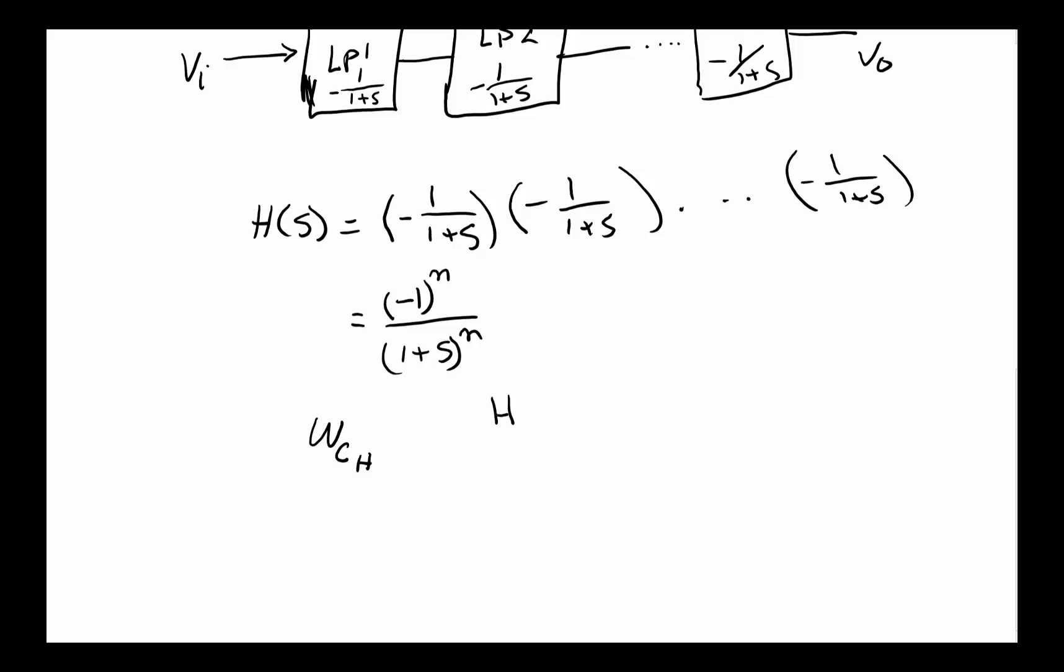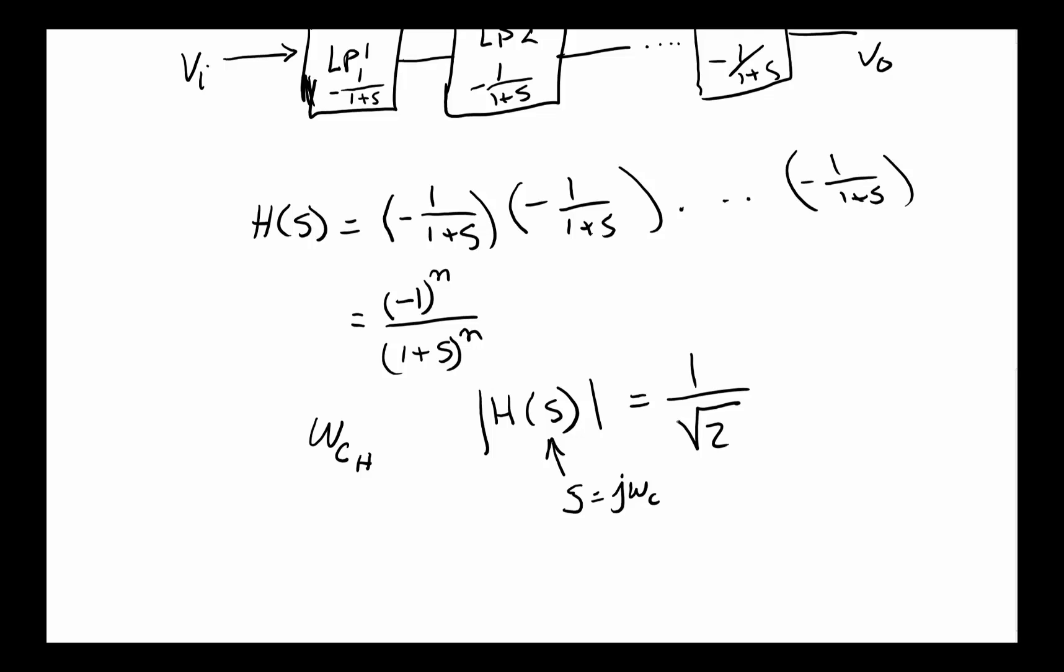Basically we have to take the magnitude of H(s), and since the gain was one, we've got to take the magnitude of H(s) where S is equal to j omega_C. So the cutoff frequency has to be equal to one over square root of two, that same idea, the half power point.